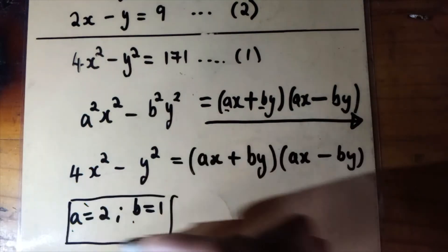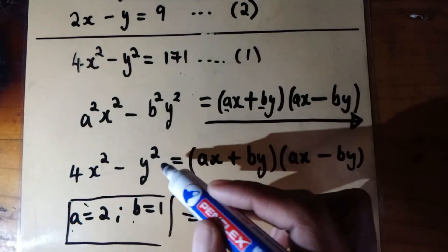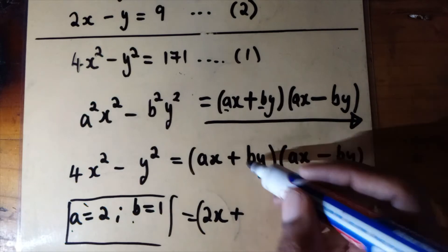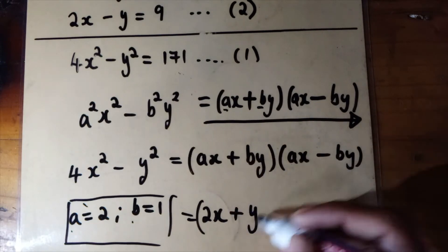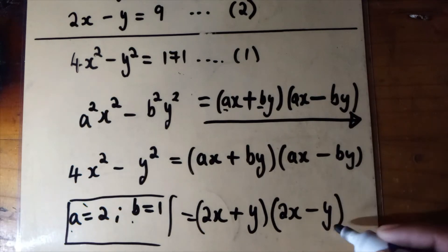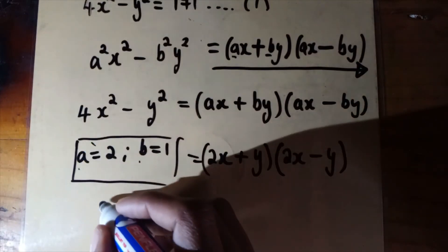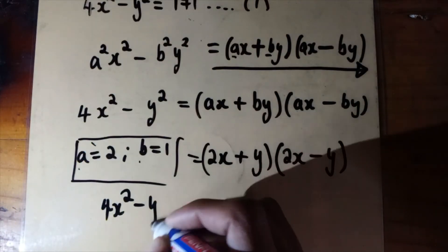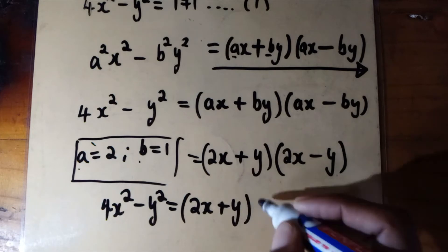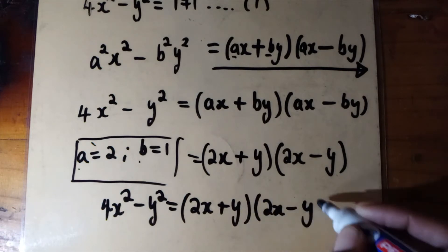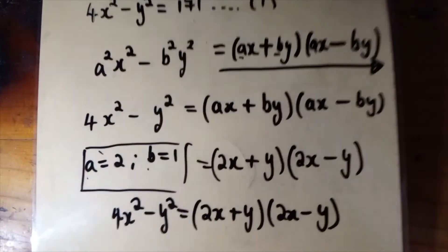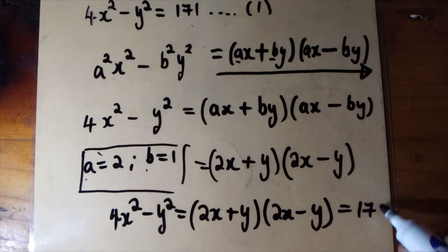Now that we have a equals 2 and b equals 1, we can factorize 4x squared minus y squared. It becomes (2x + y)(2x - y). Since this entire expression equals 171 from equation 1, we have (2x + y)(2x - y) = 171, and we call this equation 1a.